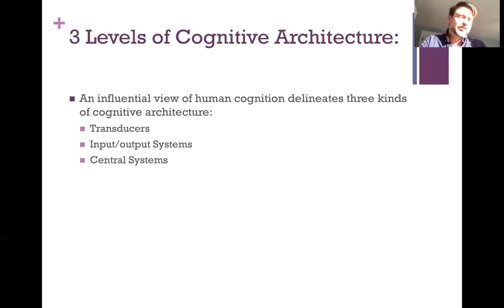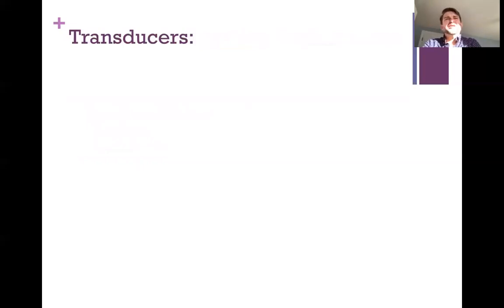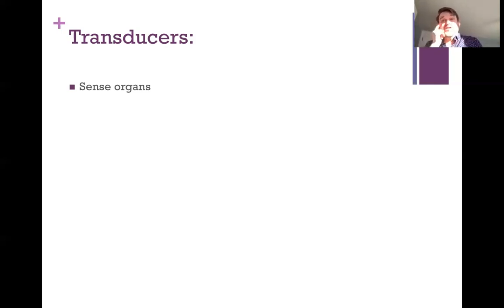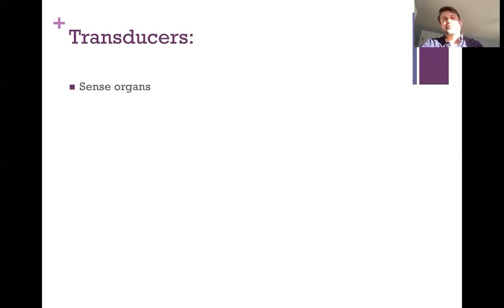Let's look at these three systems in more detail, starting with transducers. We can see transducers as equivalent to reflexes in certain important respects. The parts of our bodies that serve as transducers, according to the modularity picture, are our various sense organs — our eyes, ears, nerves in the body. All of those sensory systems are going to be the transducers.